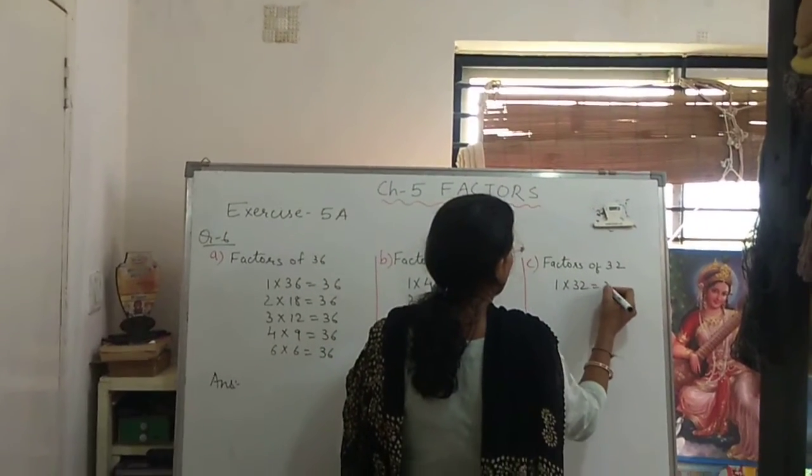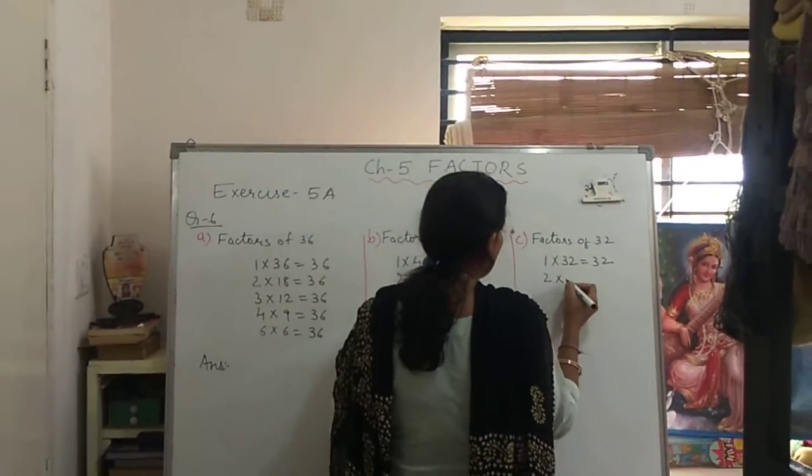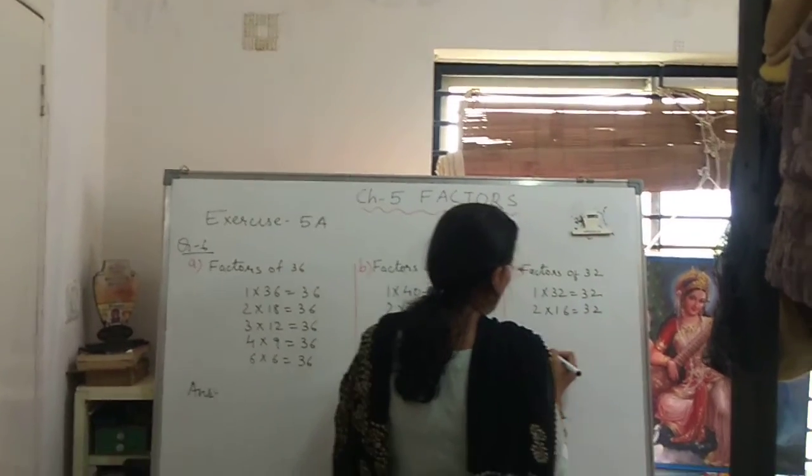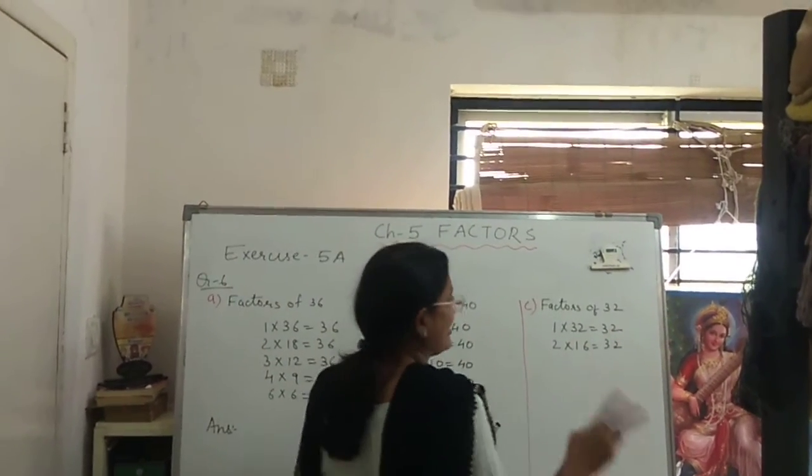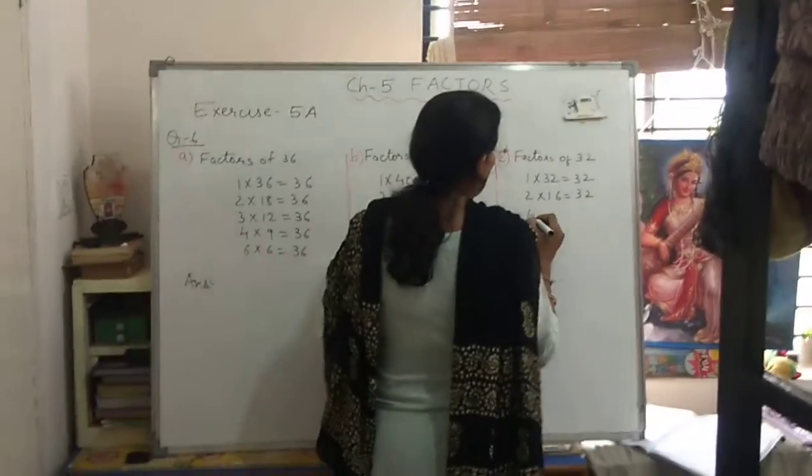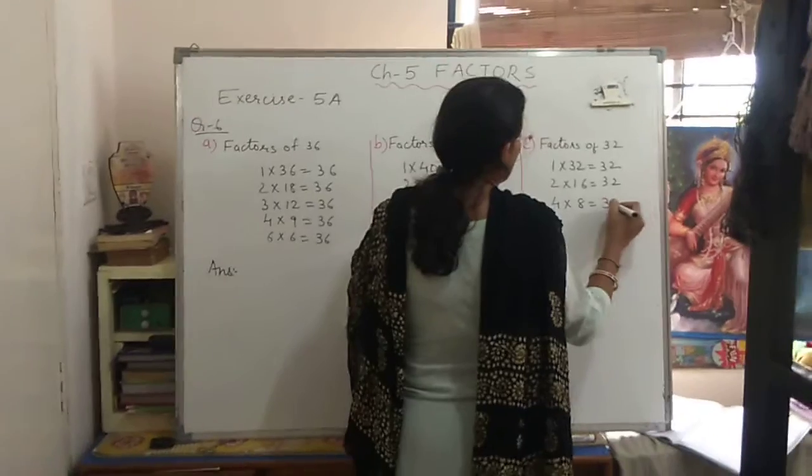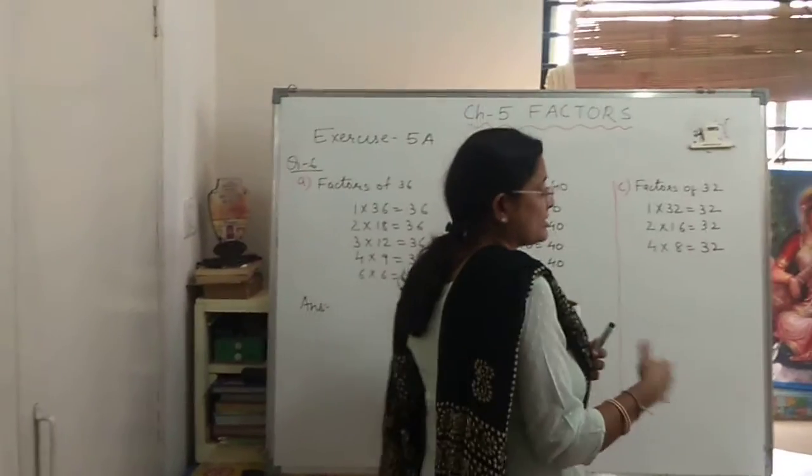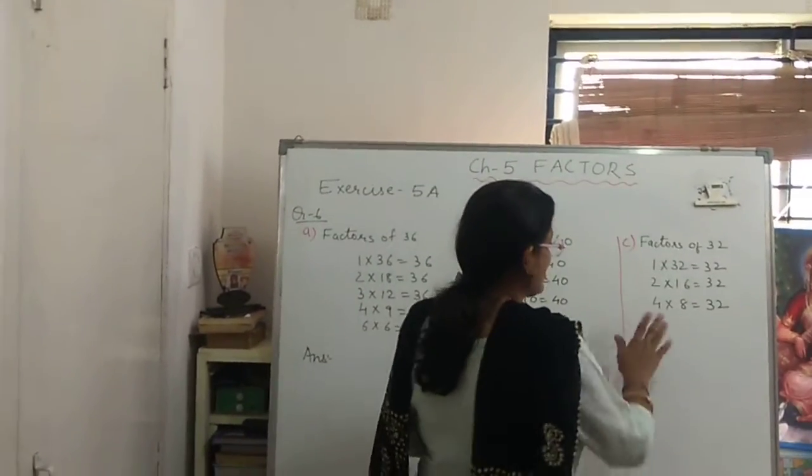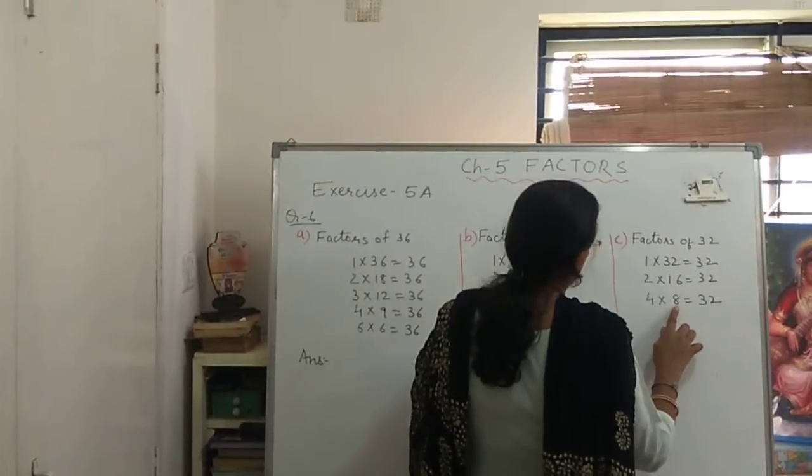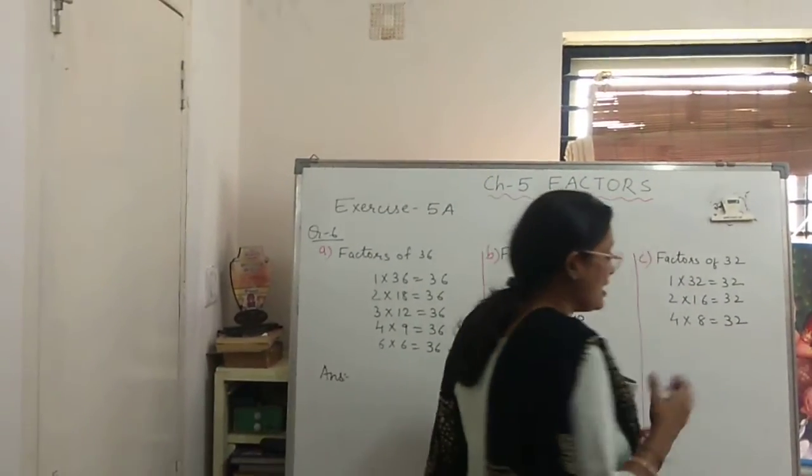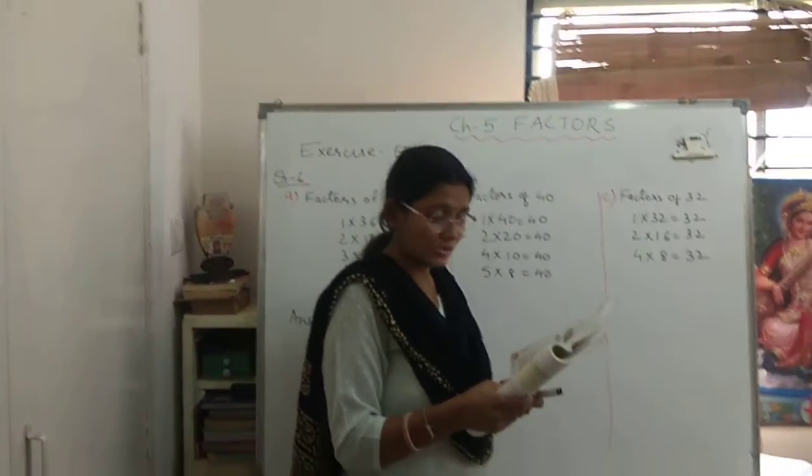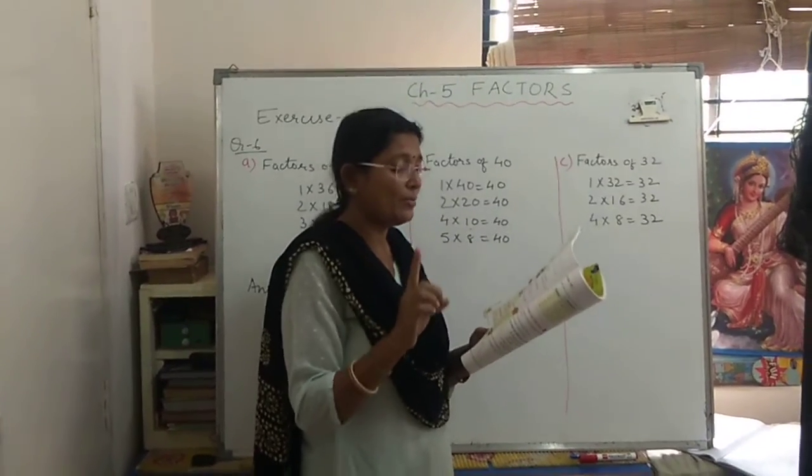What you will do here? 1 times 32 are 32. Now 2 times 16 are 32. In 3's table, 32 doesn't come because 3 tens are 30 and 3 elevens are 33. And 4 times 8 are 32. In 5's table, 32 doesn't come. In 6's table, 6 fives are 30 and 6 sixes are 36, so it doesn't come. In 7's table also it doesn't come. So 8 already came here. So what will be the answer? Answer, you can write that the piles of equal number of boxes that can be made, the sweets can be packed in number of piles 1, 2, 4, 8, 16 and 32.